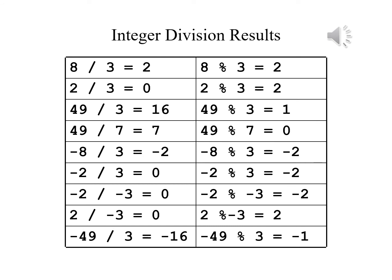We can now see some of the results. Eight divided by three is two. Eight mod three, where we get the remainder, is also two. Two divided by three is zero. Two mod three is zero — because the result is zero remainder two. Forty-nine divided by three is sixteen, and forty-nine mod three shows the remainder after division is one. Forty-nine divided by seven gives seven, and forty-nine mod seven gives us zero.